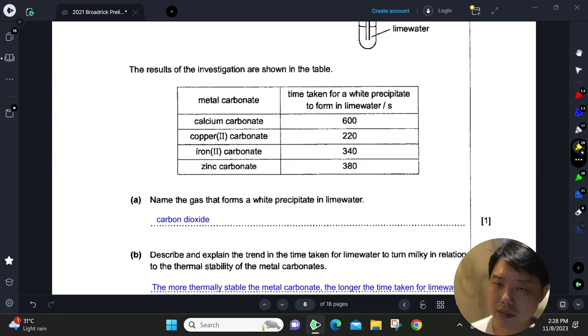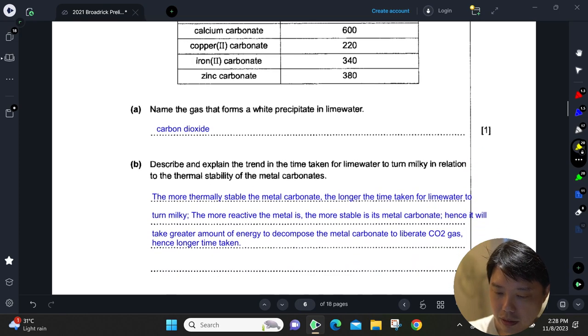Question (a): name the gas—obviously carbon dioxide. Describe and explain the trend in the time taken for lime water to turn milky in relation to the thermal stability of the metal carbonates. If you remember in your metals chapter, you remember the sequence of metals and which ones are the more reactive.